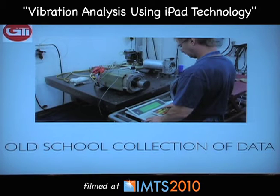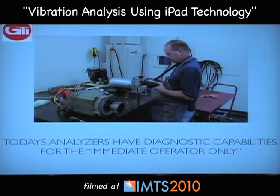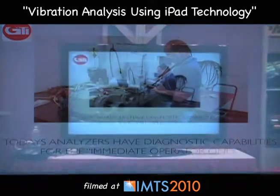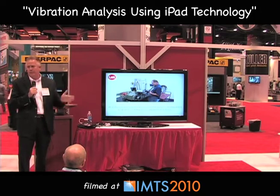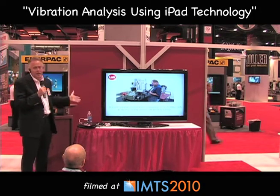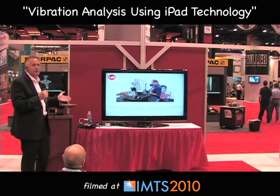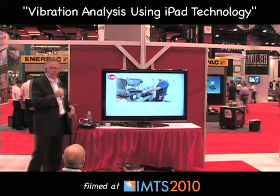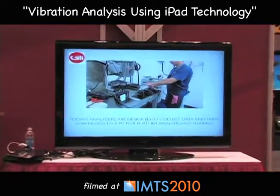The old-school data collection method had a technician roll up on a cart — in a traditional plant, he would wheel up to the machine, take various data collection points, then move to the next machine and so on. Today's traditional analyzers have diagnostic capabilities only for the immediate operator, meaning that person can look at the signature and determine whether there's an imbalance problem or a bad bearing, but he's not able to share that information until he returns to the office and hooks the device up to a computer.